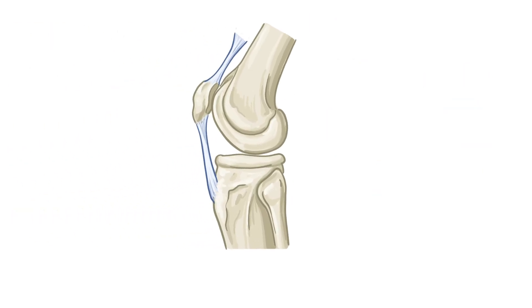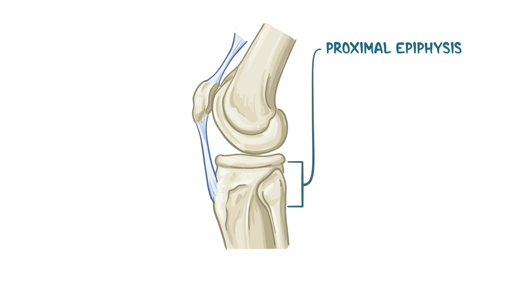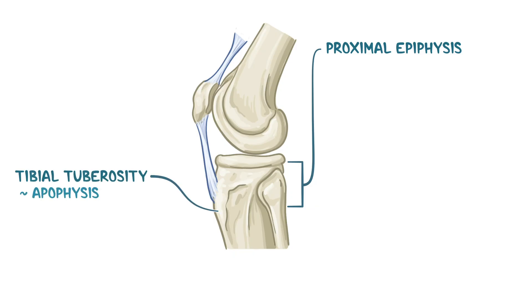Focusing in on the knee, the proximal epiphysis of the tibia — which is the upper end of the tibia that contributes to the knee joint — has a bony prominence called the tibial tuberosity. This is considered an apophysis, meaning that it's a bony prominence that serves as a site for tendon attachment.